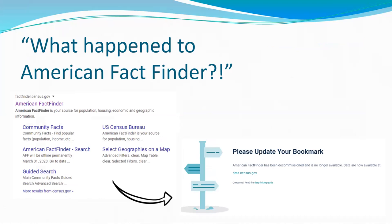American FactFinder was discontinued in March 2020 in favor of data.census.gov. Google still shows FactFinder in results because site indexes haven't fully updated. Clicking on it redirects you to update your bookmark - it no longer exists. Many links on census.gov still aren't correctly pointing to the new data portal yet.